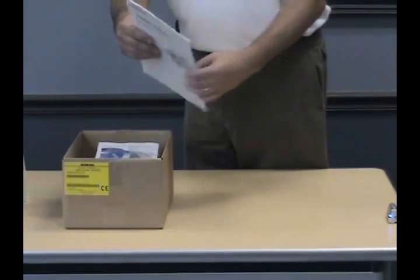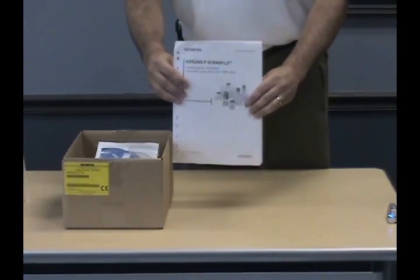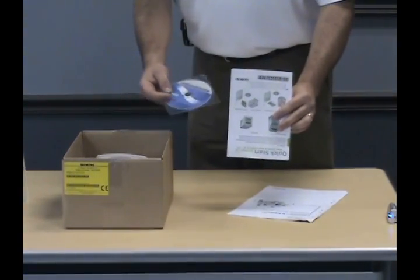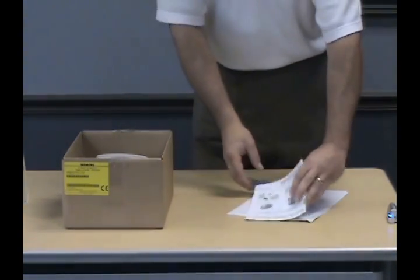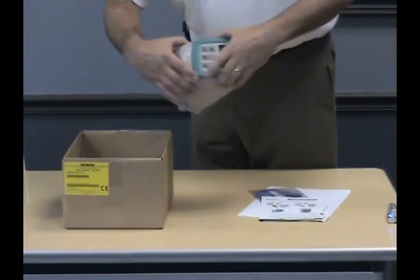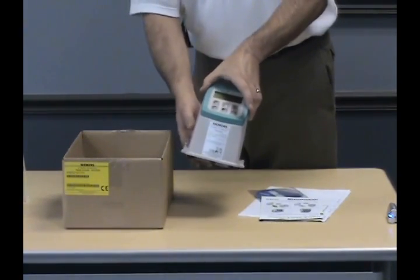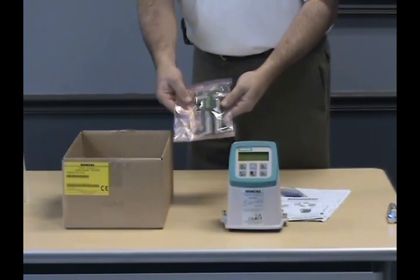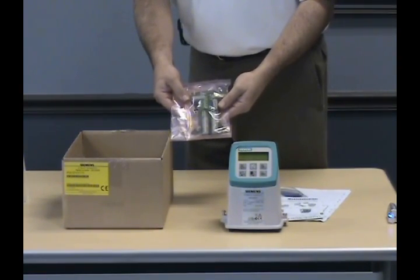Contained in the transmitter box are the instructions for the flow meter, a quick start guide and CD, the transmitter itself, plus an accessory bag containing the terminal board and ground wire.